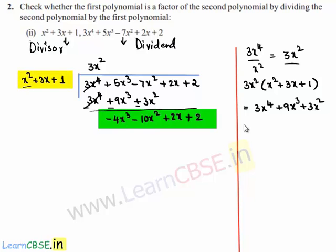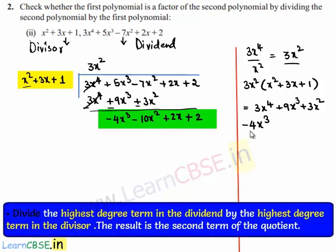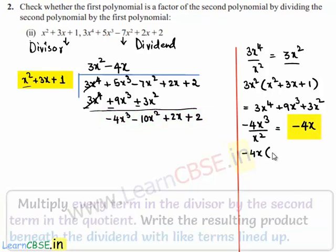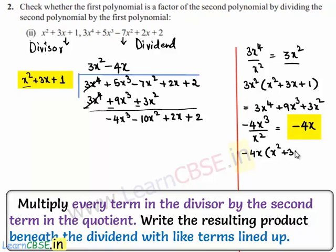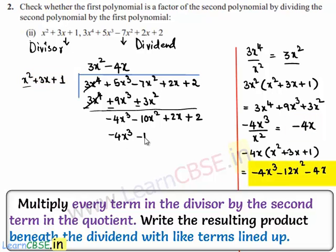The highest degree term of the new dividend is minus 4x³ and the divisor has highest term x². On dividing, we get minus 4x, written at the place of the quotient. Minus 4x multiplied by x² plus 3x plus 1 gives minus 4x³ minus 12x² minus 4x. This product is written here.